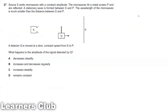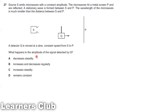Question 27: Source S emits microwaves with constant amplitude. The microwaves hit a metal screen P and are reflected, forming a stationary wave between S and P. The wavelength of the microwave is much smaller than the distance between S and P — meaning there are many wavelengths between them. A detector Q is moved at a slow constant speed from S to P. What happens to the amplitude of the signal detected by Q?